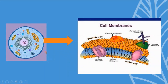Cell membrane is basically the outermost boundary, present in both prokaryotic and eukaryotic cells. In prokaryotic cells, another cell wall is also present, but the cell membrane or plasma membrane is flexible, thin, and elastic in nature. It has living characteristics, and lipids and proteins are embedded in it.